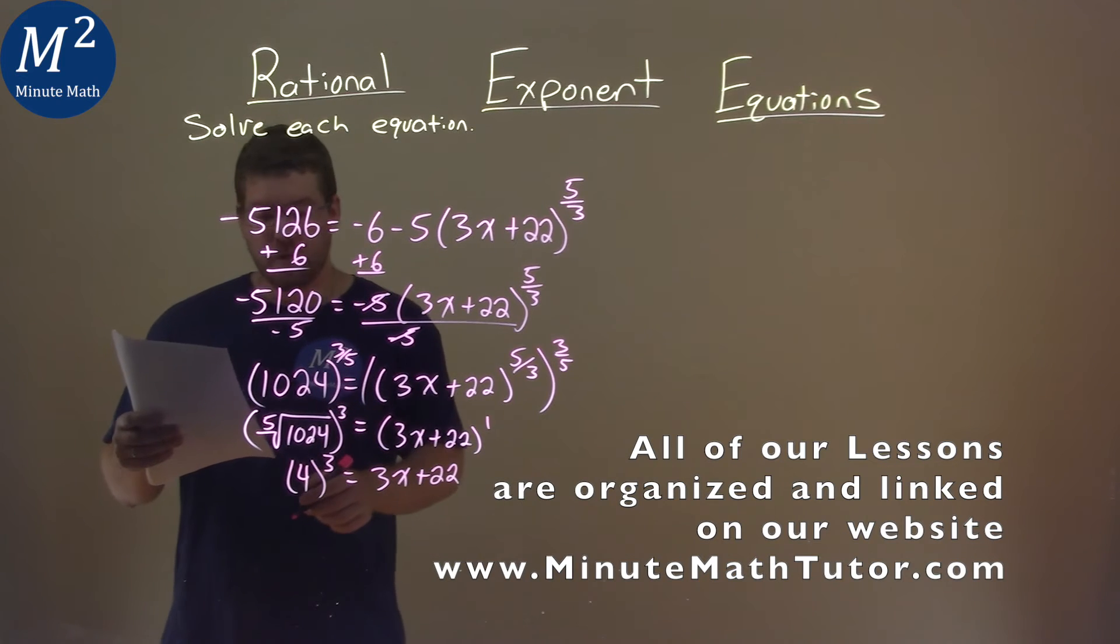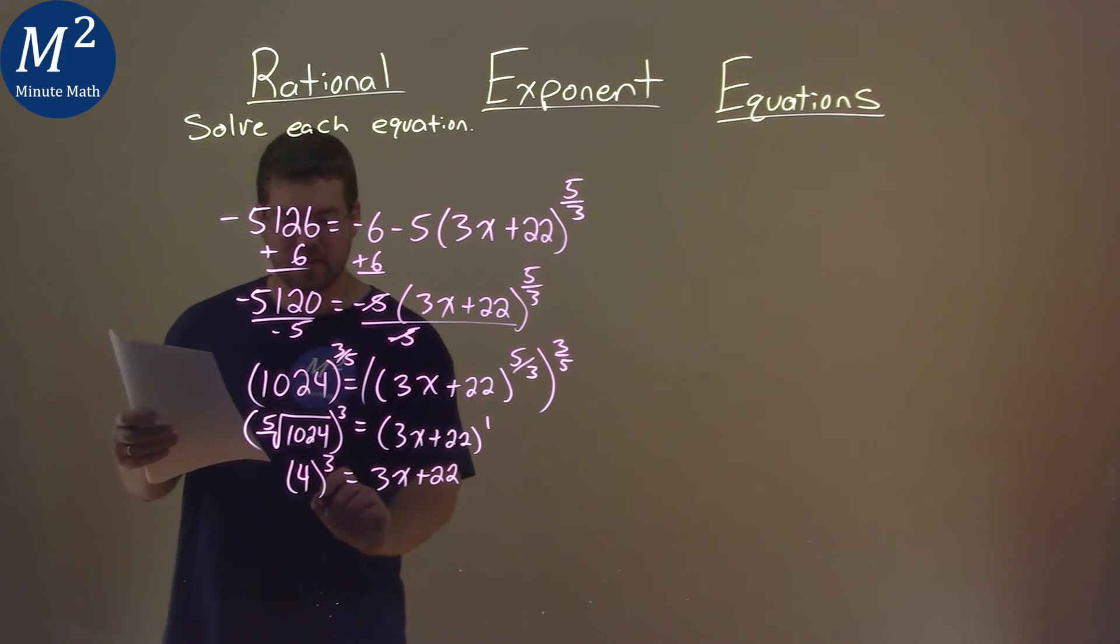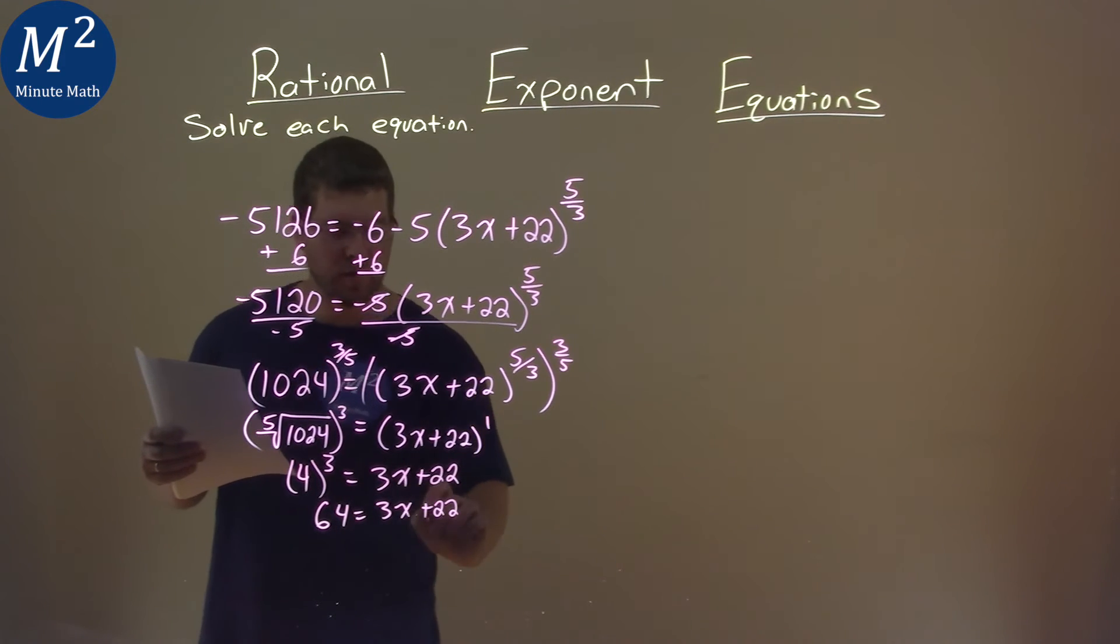4 to the third power is 64, so 64 equals 3x plus 22. Let's subtract 22 from both sides.